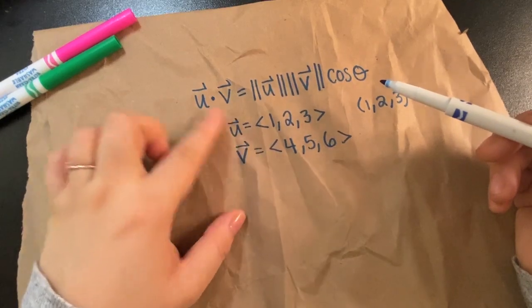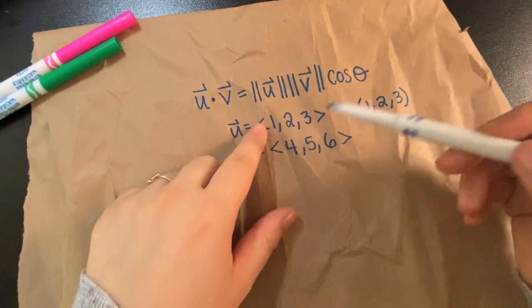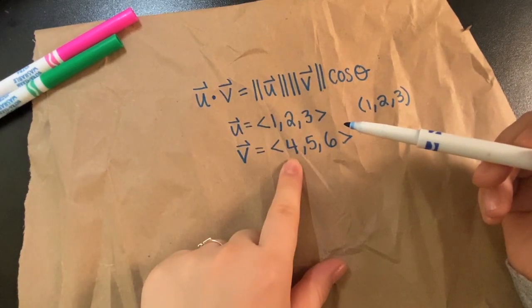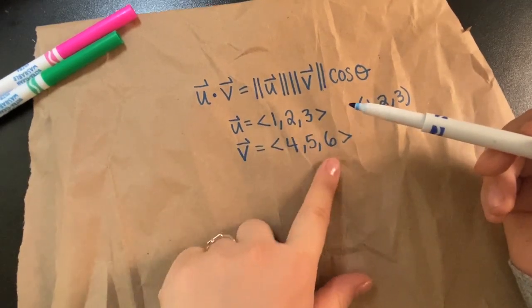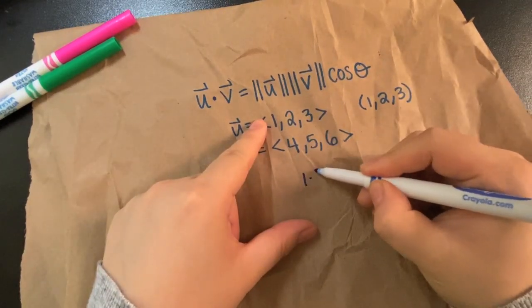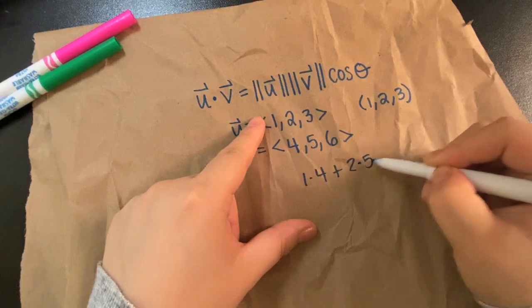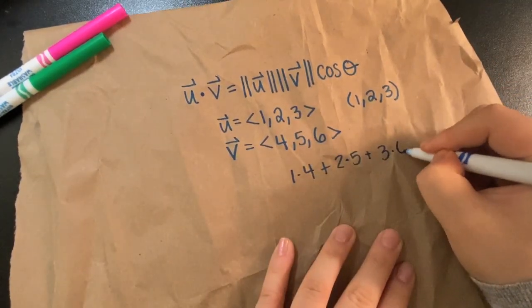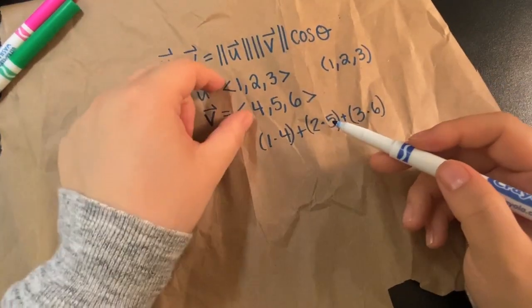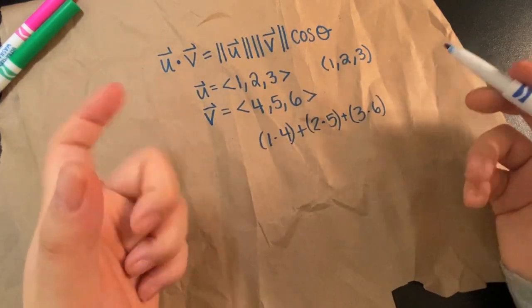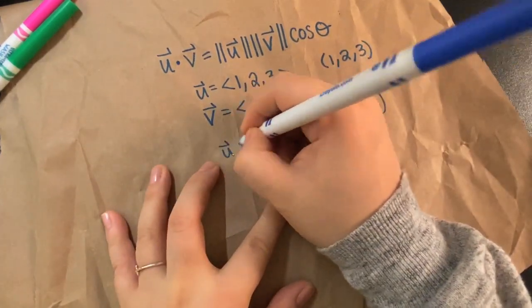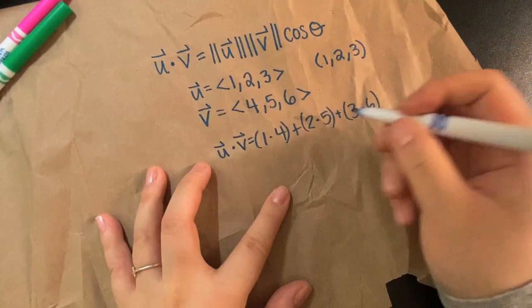Now in order to dot them, U dot V, what we do is we just pair corresponding coordinates. So if we call this U1 and this V1, like if U1, U2, U3, V1, V2, V3, we pair them and we multiply. So 1 times 4 plus 2 times 5 plus 3 times 6. And I'm going to just go ahead and put parentheses to emphasize that we do the multiplication first between the two pairs and then we add. But that's just order of operations.